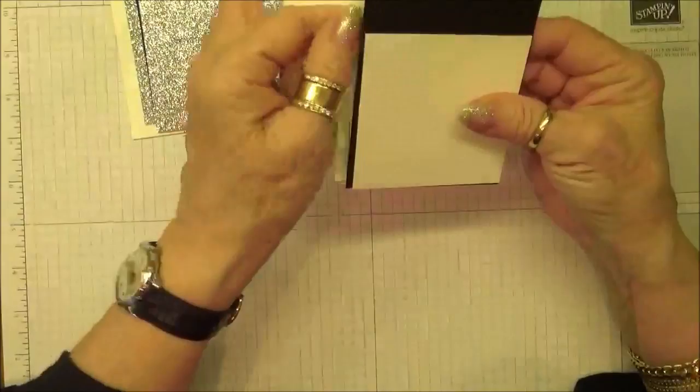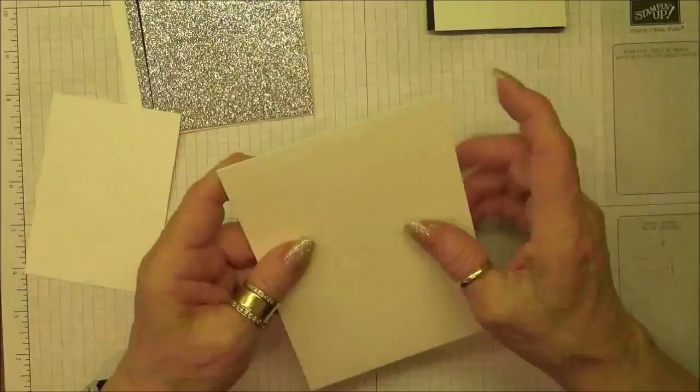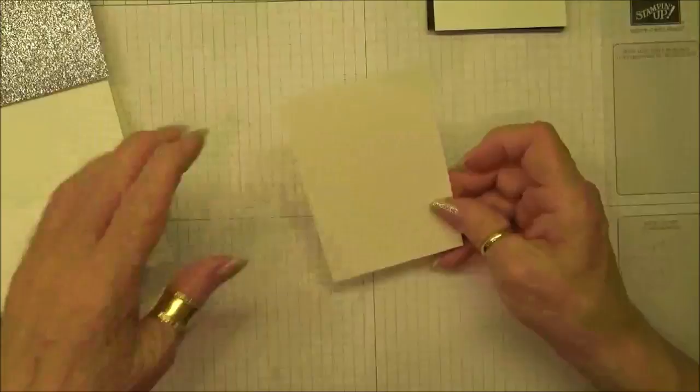So let's get started on our card. We're going to take thick Whisper White, it's four and a quarter by eleven and scored at five and a half. Then I'm going to take a smaller piece of Whisper White and I'm going to stamp my floral element.